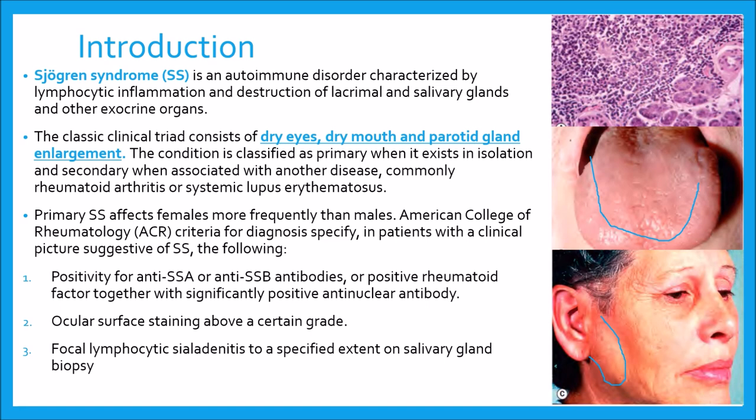Other features are common and can affect all organ systems. The condition is classified as primary when it exists in isolation and secondary when associated with another disease, most commonly rheumatoid arthritis or systemic lupus erythematosus (SLE). Primary Sjogren's syndrome affects females more frequently than males.